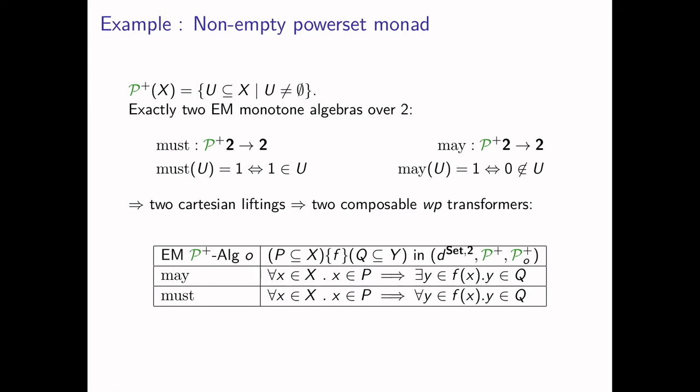We can also look at the non-empty powerset monad, used to model non-determinism. P-plus maps X to the non-empty subsets of X, and there are two EM monotone algebras over 2: MAY, which models may non-determinism, and MUST. They induce two Cartesian liftings. The Hoare triple PFQ is satisfied in the MAY setting if for any input in P there is a possible execution of F whose output is in Q. The MUST interpretation requires that if the input satisfies P, then every possible execution has an output satisfying Q.